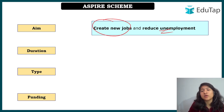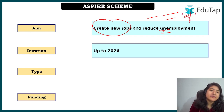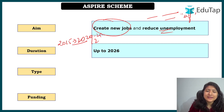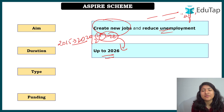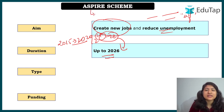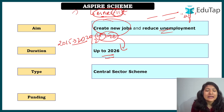The aim is to create new jobs and reduce unemployment — not by releasing government vacancies, but by focusing on self-employment. The scheme was initially launched in 2015 until 2020, then extended to 2021, and in the 2021-22 budget session it was further extended till 2026. The updated guidelines from the extended phase are what we will focus on today. Also, the scheme was originally called 'ASPIRE 2' but a circular removed the '2', so it remains simply ASPIRE.